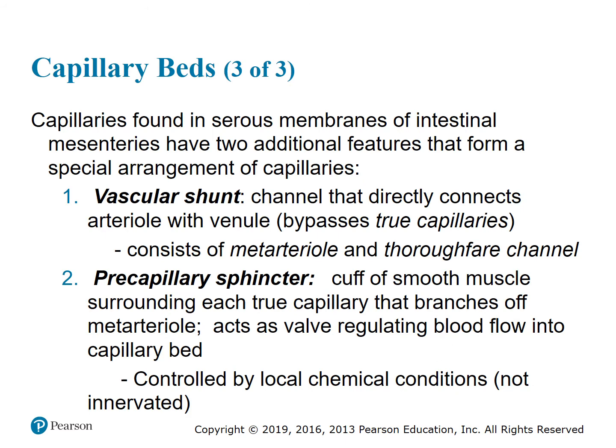Capillaries in serous membranes of intestinal mesenteries have two additional features. The first is the vascular shunt — a channel that directly connects the arteriole with the venule, bypassing true capillaries. It consists of a meta-arteriole and a thoroughfare channel. The second is the pre-capillary sphincter, a cuff of smooth muscle surrounding each true capillary branching off the meta-arteriole. It acts as a valve regulating blood flow into the capillary bed, controlled by local chemical conditions and not innervated.